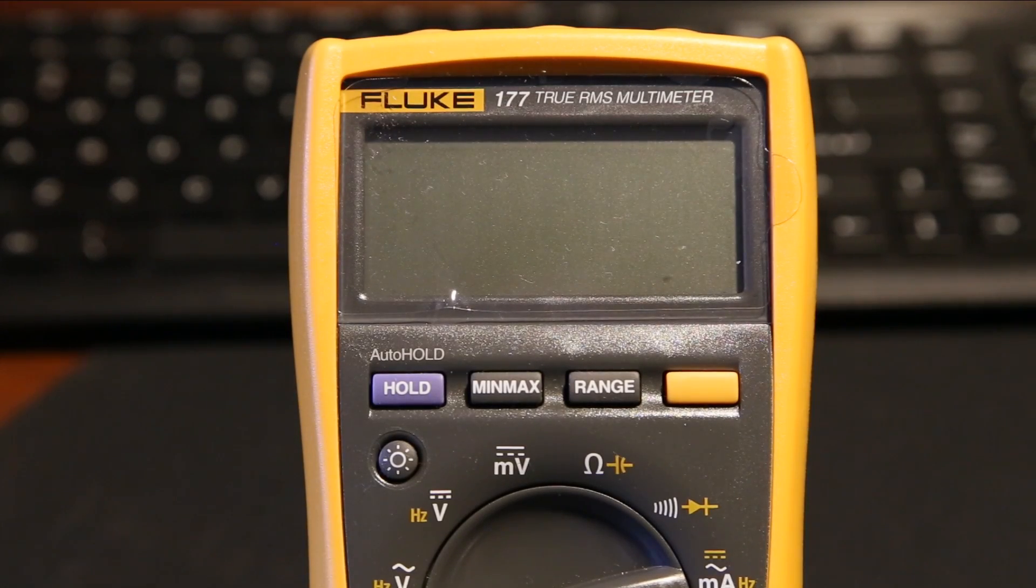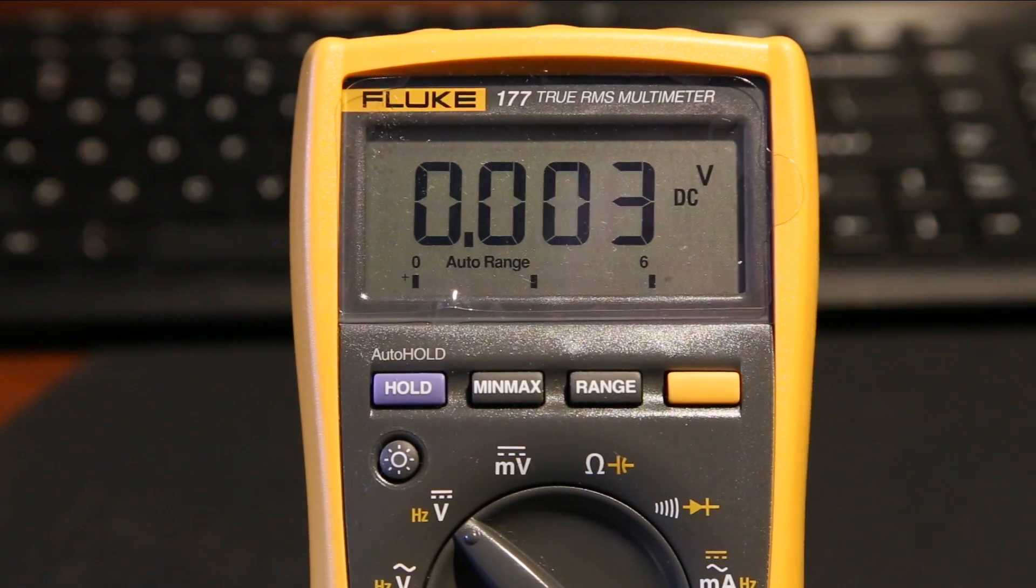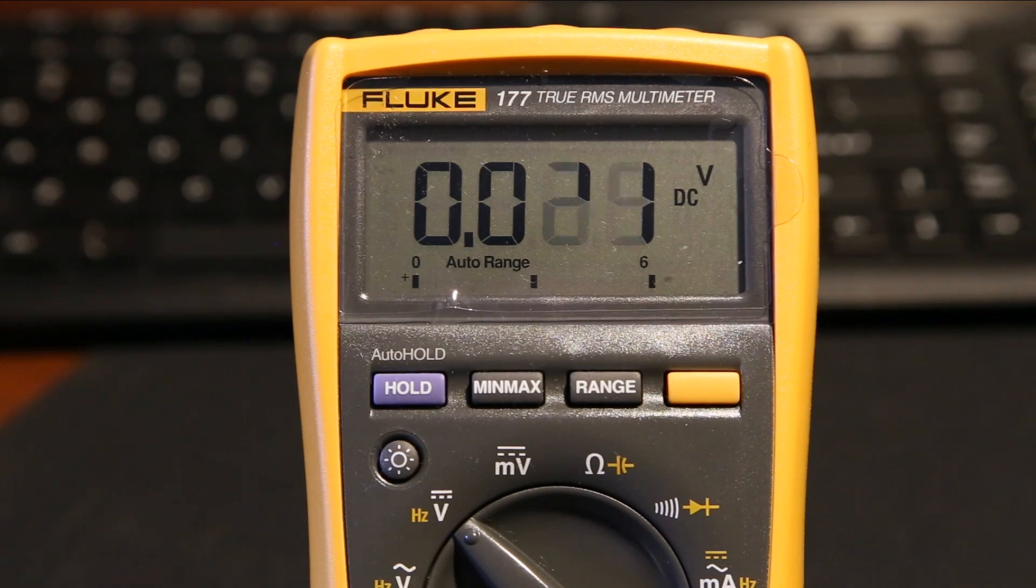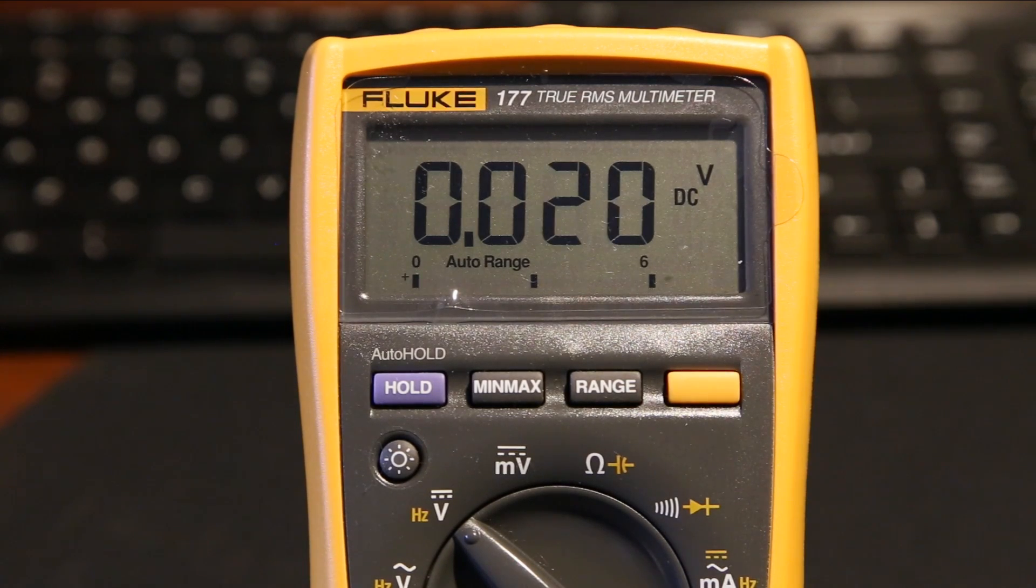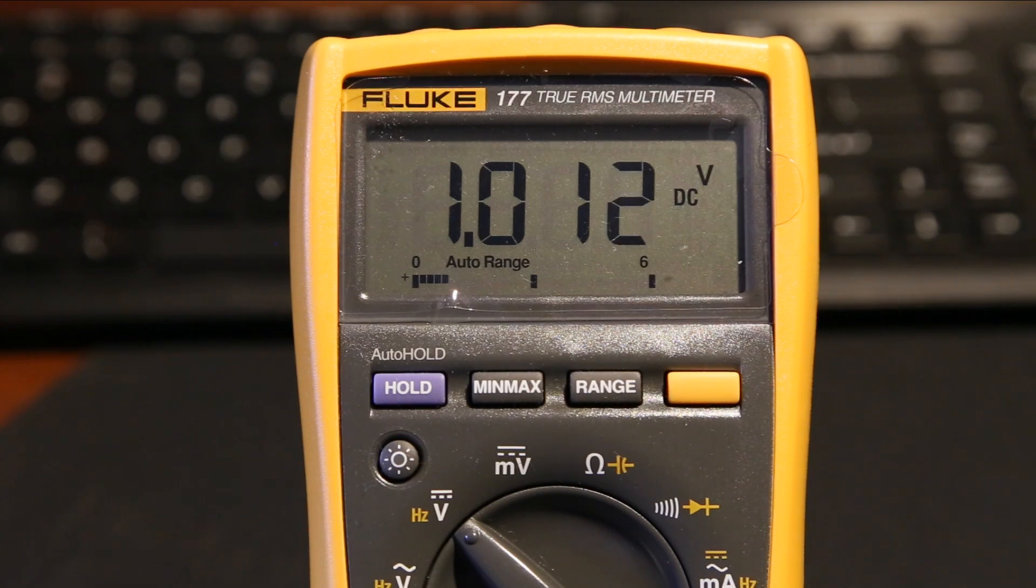Right, now we've got the Fluke 177 set up. I'm going to get it onto DC volts. I'm connecting this specific meter onto a high precision digitally controlled power supply, which I've been working with for a couple of months, which is finally complete. Let's just power over. Okay, this power supply does give about 20 millivolts output when it's not activated. But let's start at around 1 volt for argument's sake.